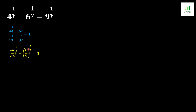In the next step we apply the basic rule of algebra: if two different bases have the same power, they can be written in one bracket with one power. We also simplify the fraction 6 over 9 by dividing numerator and denominator by 3, giving 2 over 3. So we get (4 over 9) to the power 1 over y minus (2 over 3) to the power 1 over y equal to 1. We call this equation 1.